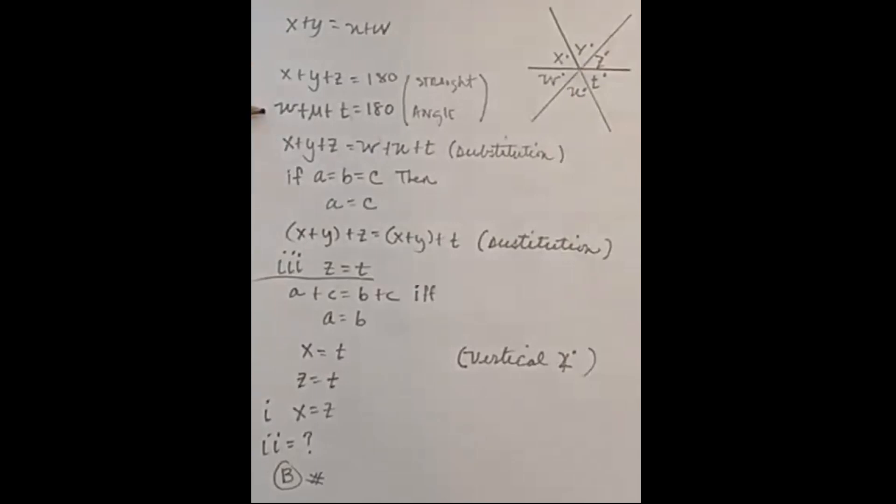Since they're both equal to 180, they're equal to each other by the substitution property. If A equals B and B equals C, then A equals C. If two things equal something else, they equal each other. From this equation, we can get this equation by using the fact that X plus Y equals U plus W and the substitution property.